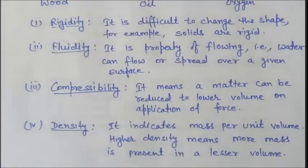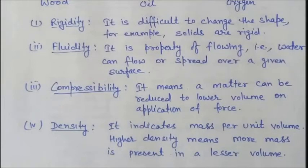The next term is density. Density is mass per unit volume of a material — it indicates the mass present in a unit volume. Higher density means more mass is present in a lesser volume. Gases have the lowest density because their particles are very far apart, while solids have higher densities.